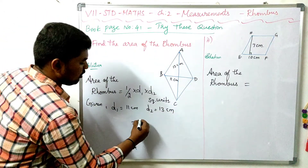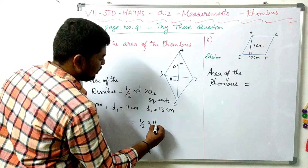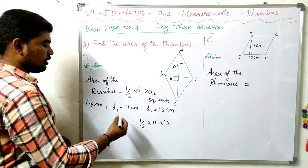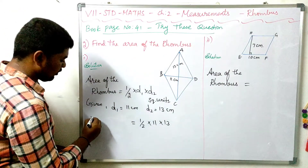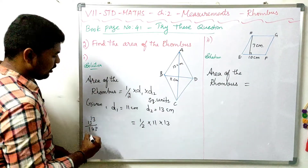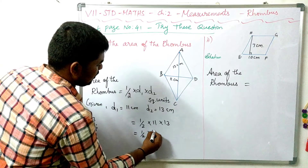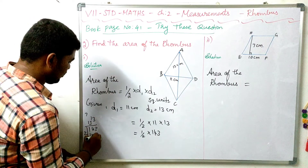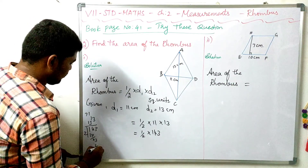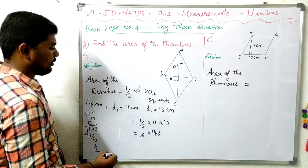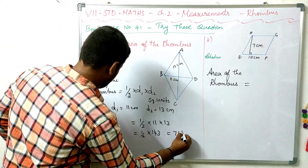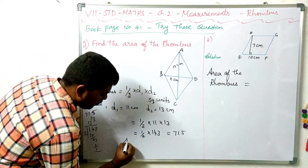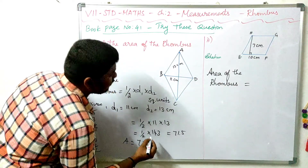The formula is half into d1 into d2. Substituting the values: Area of rhombus A equals one half multiplied by 11 multiplied by 13, which equals 71.5 square centimetres.